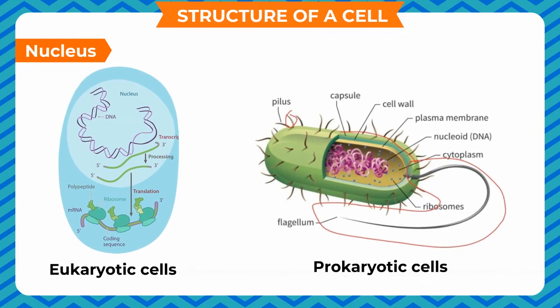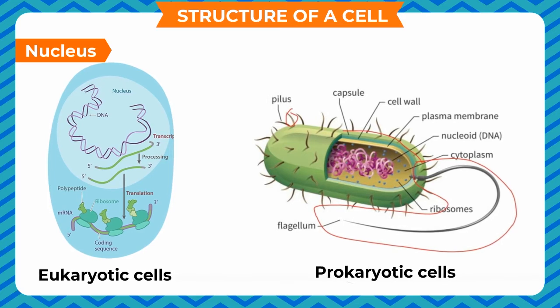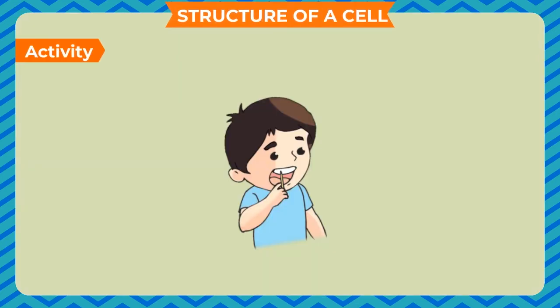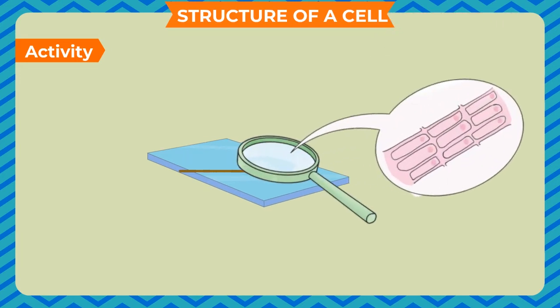To study an animal cell, gently scrape the inner side of your cheek with a toothpick. Put the scraping on a glass slide. Add a drop of methylene blue. This makes it easier to see the cell under microscope. Place a coverslip on it and examine the slide under microscope.